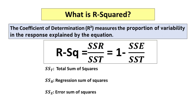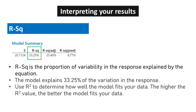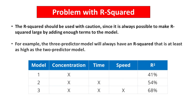R-squared and R-squared Adjusted: the coefficient of determination, R-squared, measures the proportion of variability in the response explained by the equation. R-squared equals 1 minus the error sum of squares divided by the total sum of squares. The model in the example explains 33.25% of the variation in the response. The higher the R-squared value, the better the model fits your data. However, R-squared should be used with caution, since it is always possible to make it large by adding enough terms — a three-predictor model will always have an R-squared at least as high as a two-predictor model.